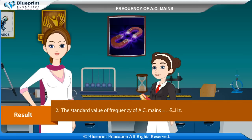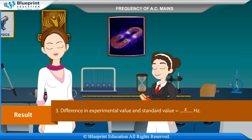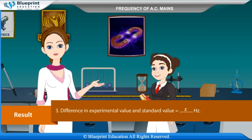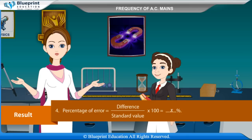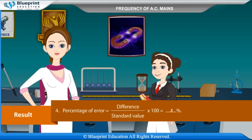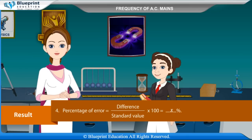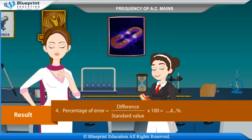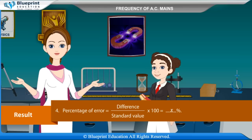The standard value of frequency of AC mains = x Hz. Difference between experimental value and standard value = x Hz. Percentage of error = x%.